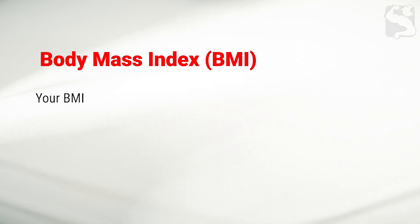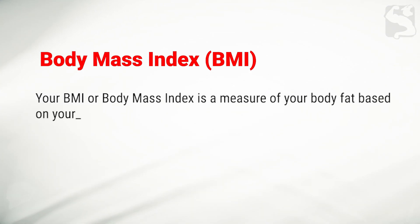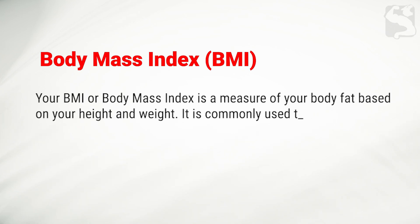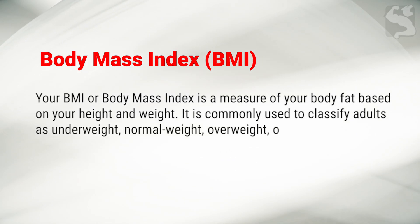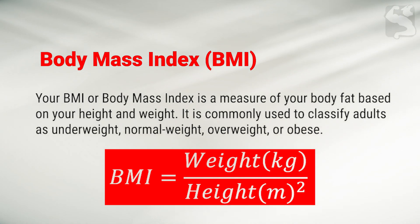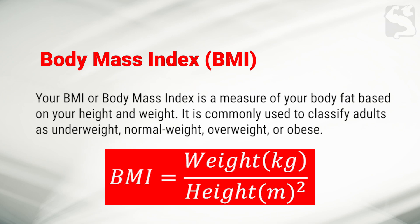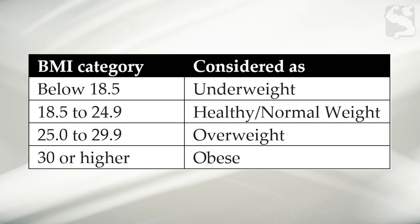Your BMI, or body mass index, is a measure of your body fat based on your height and weight. It is commonly used to classify adults as underweight, normal weight, overweight, or obese. It is defined as your weight in kilograms over the square of your height in meters. Once you do the calculation, determine your BMI category using this table.